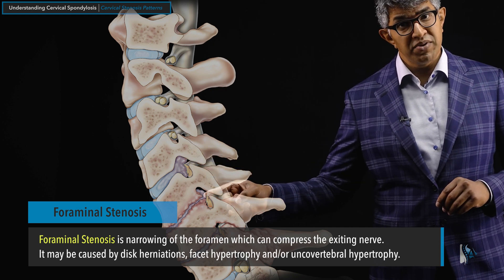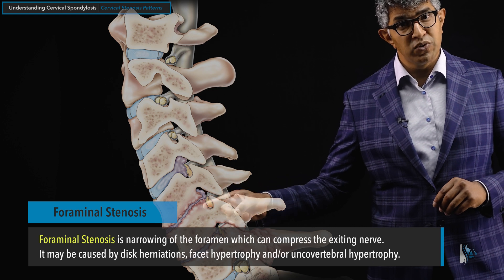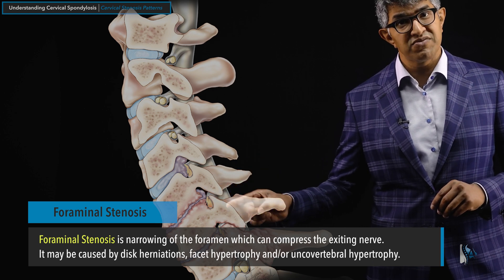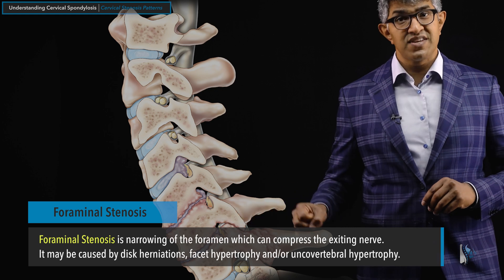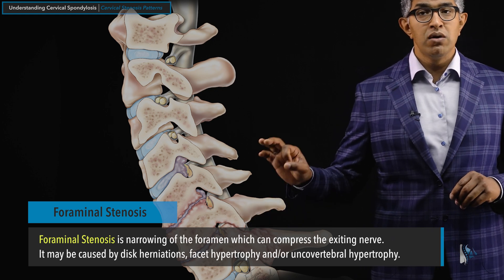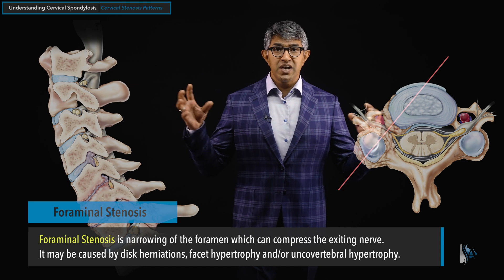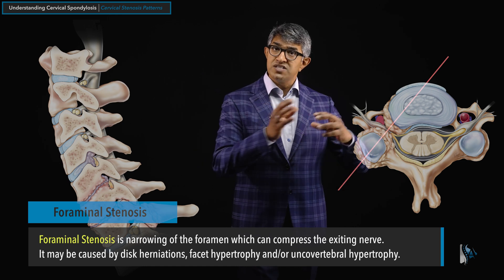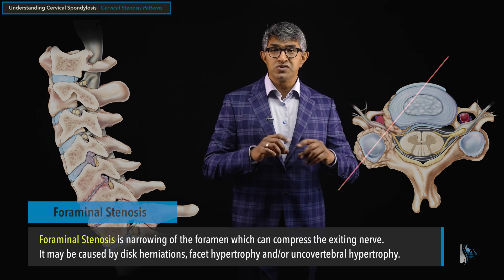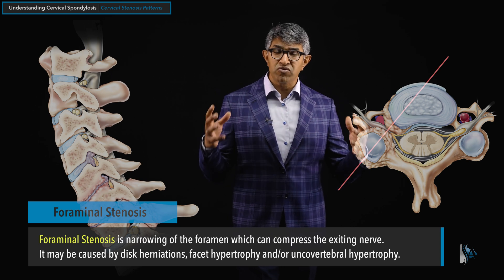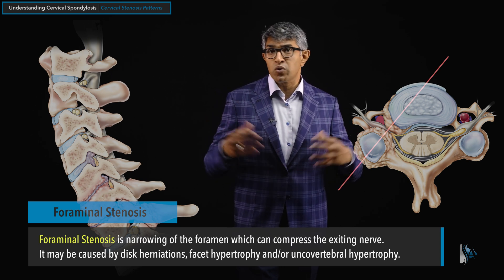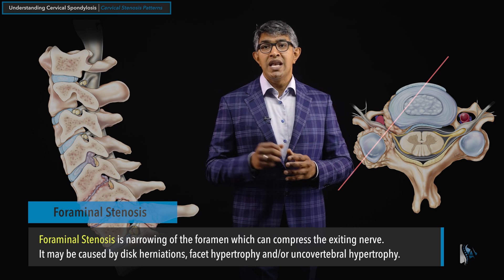At C5-6, there's a bit of disc and some bone spurs still causing foraminal stenosis. At C6-7, foraminal stenosis is caused from the front and the back, mostly from bone spurs. But whatever the cause, narrowing is the outcome. When we say foraminal stenosis, many different things can cause it, but foraminal stenosis itself just means narrowing of the foramen, whatever its cause might be.